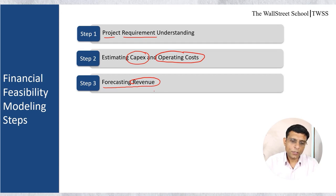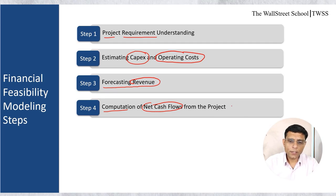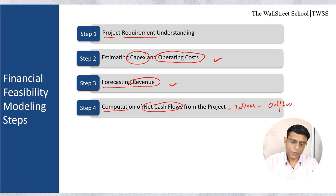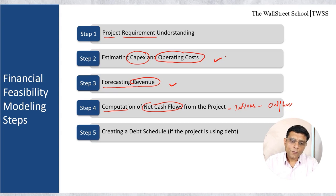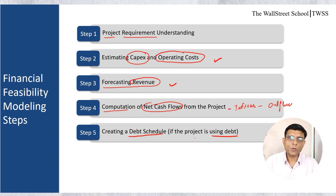Step 4: Compute net cash flows from the project — cash inflows minus cash outflows, essentially step 3 minus step 2. Step 5: Create a debt schedule. This debt schedule will be created only if the project is financed through debt. If you are using 100% equity, no debt schedule is required. Under the debt schedule, we will estimate the total amount of debt we are raising, repaying, and the interest cost on it.